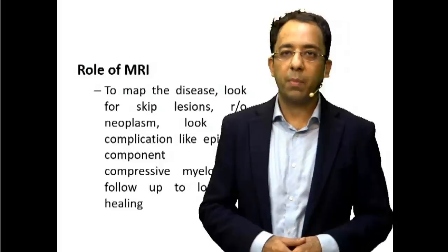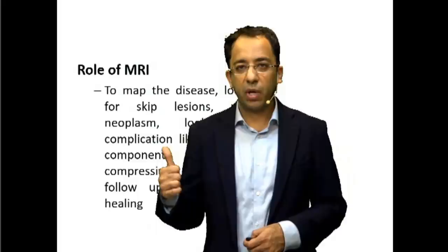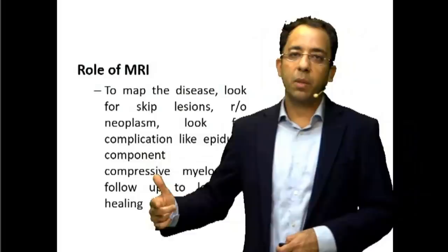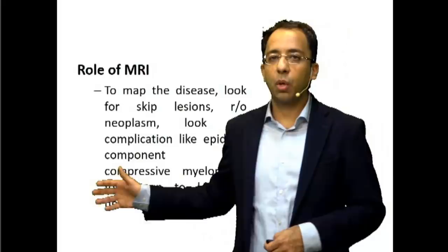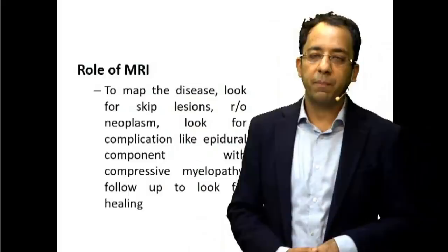The key take-home messages from today's Unplugged series: the cervical thoracic sign; rim enhancement in a soft tissue lesion means abscess; vertebral destruction at contiguous multiple levels with an adjoining abscess is typically tubercular in the Indian context. And do not forget the role of MRI — MRI has a big role to play in Pott's spine.